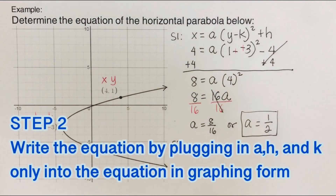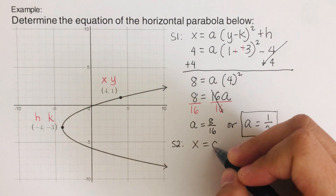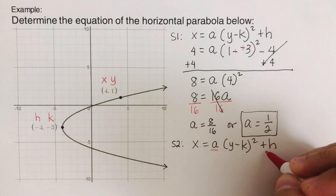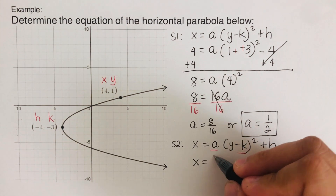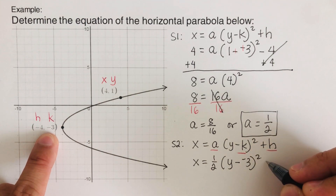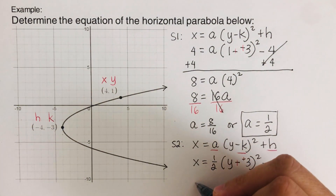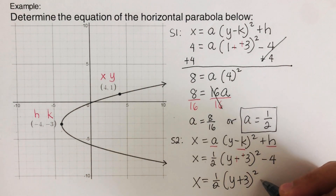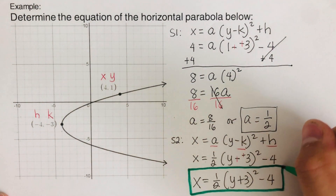Now we move on to step 2: write the equation by plugging in a, h, and k only into the equation in graphing form — x equals a(y minus k) squared plus h. Plugging in a equals 1/2, k equals negative 3, and h equals negative 4, and remembering that two negatives make a positive, the final equation is x equals 1/2 times (y plus 3) squared minus 4. This is the equation for this graph.